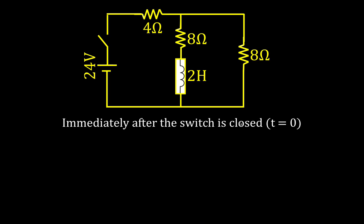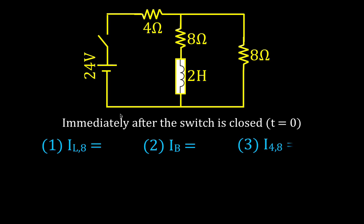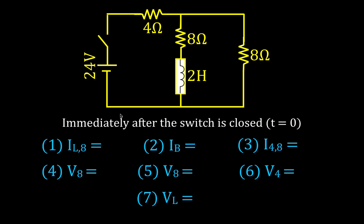The first point is immediately after the switch has been closed, which we call time equals 0. Then we'll analyze it after the switch has been closed for a long time. Then we'll reopen the switch and look at all values, and finally after it's been open for a long time. Before closing the switch, the key thing to understand is what inductors do: they resist changes in current by producing a self-induced voltage, a back EMF.